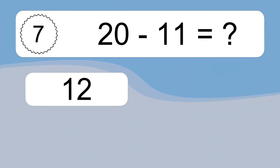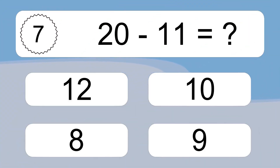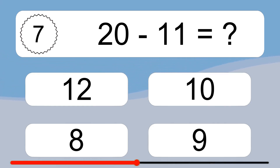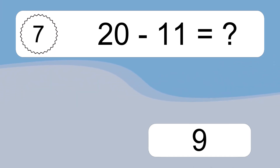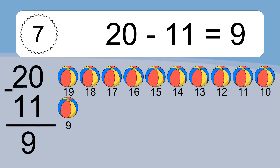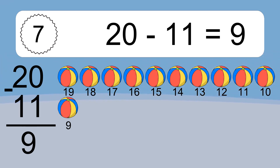20 minus 11 equals what? 20 minus 11 equals 9. Let's count it: 19, 18, 17, 16, 15, 14, 13, 12, 11, 10, 9.